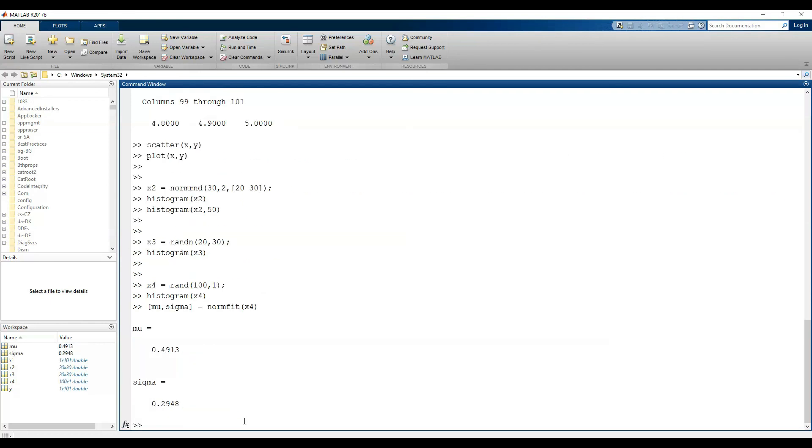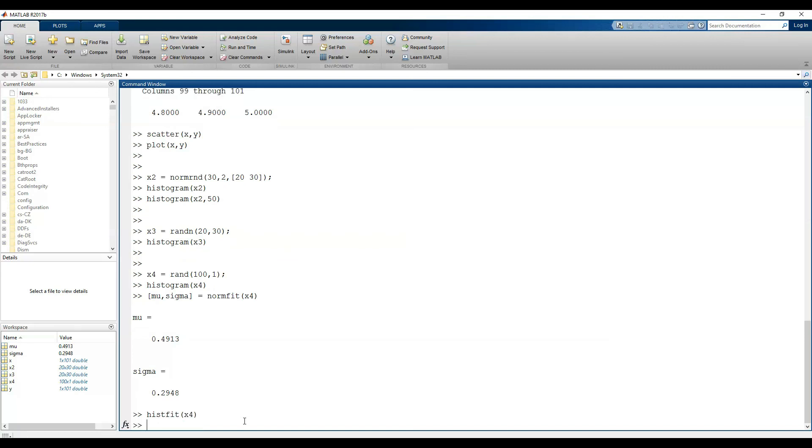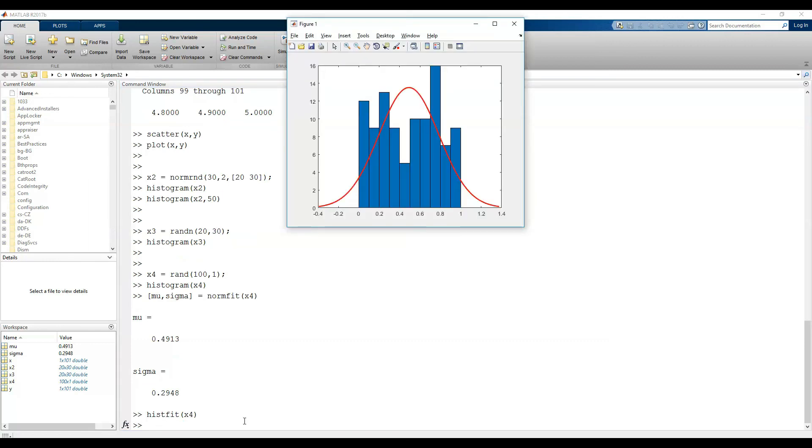HistFit also is another function that fits a normal distribution on the given data, drawing the histogram and the shape of distribution function at the same time.